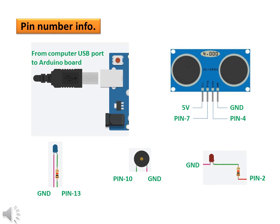You can choose pin numbers as per your wish, but in that case you have to write the program accordingly. Now define pin numbers which are printed on the Arduino board and connect items through wires. Connect the Arduino board to the computer through USB.